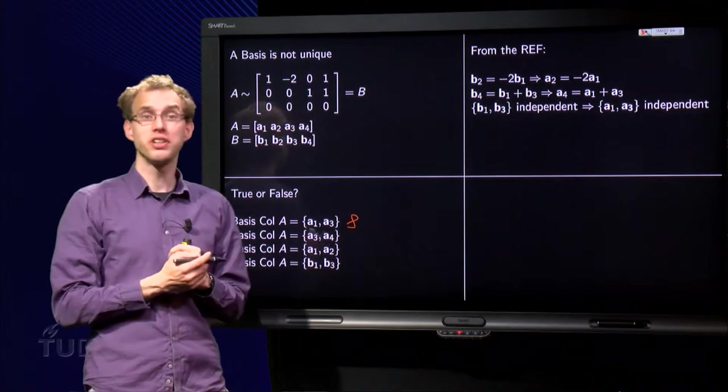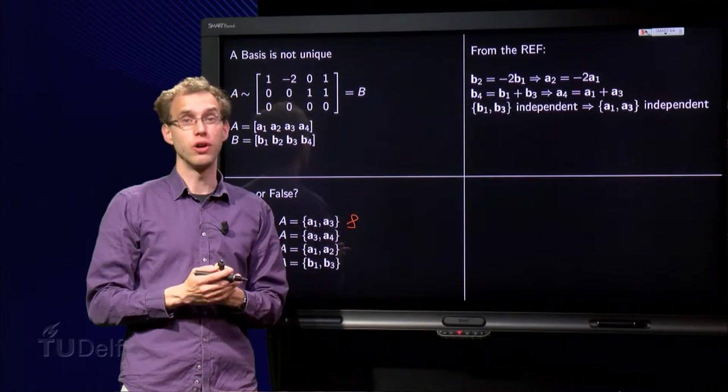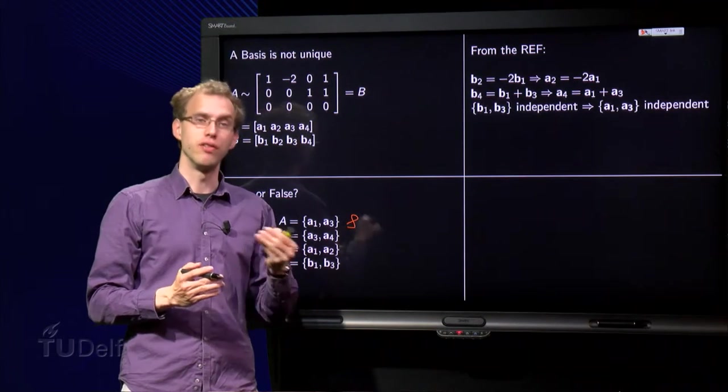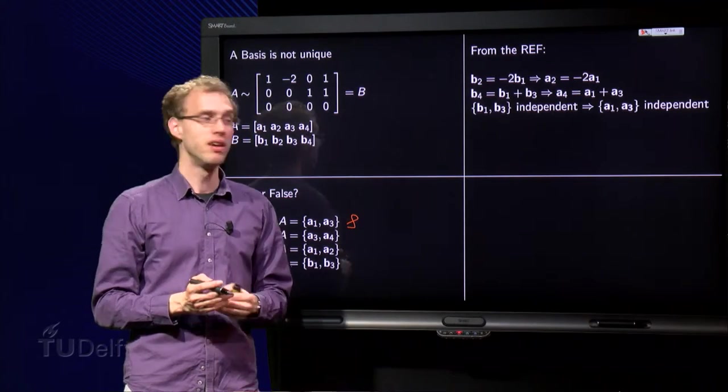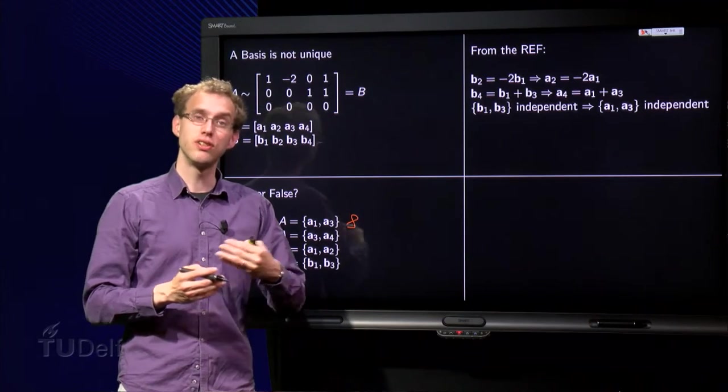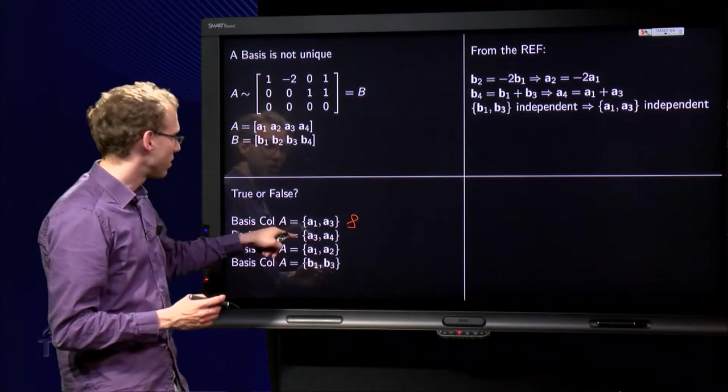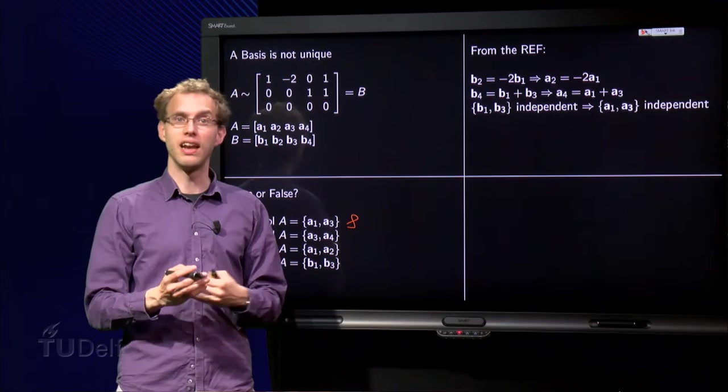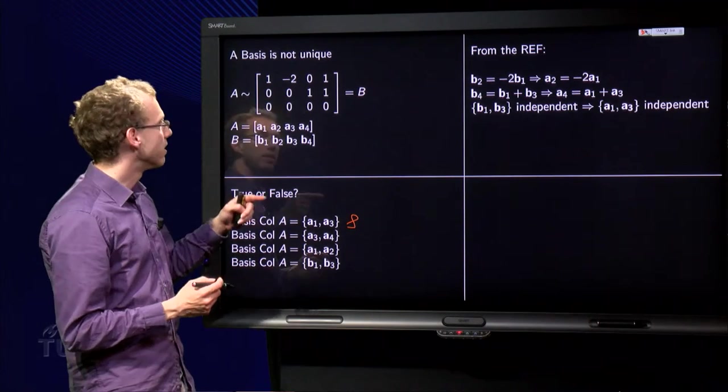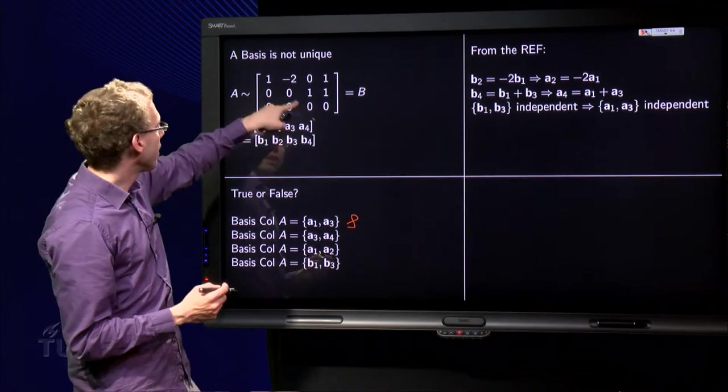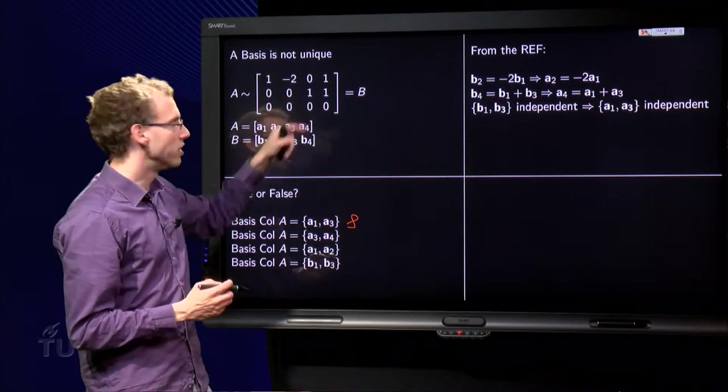But what about all those other sets? Are they also bases for col A? We have seen before that the number of vectors in the basis is always the same, so we need to look for sets with two vectors. What about the set consisting of A3 and A4? Are they independent? Well, look at B3 and B4. As you see, B3 and B4 are not a multiple of each other.